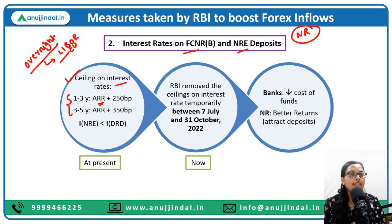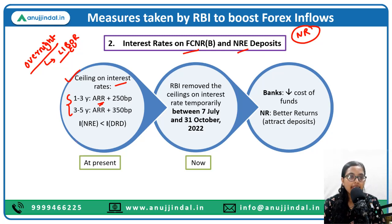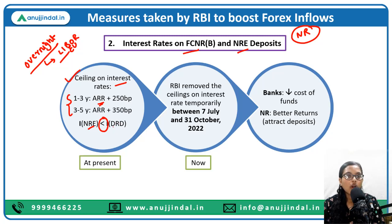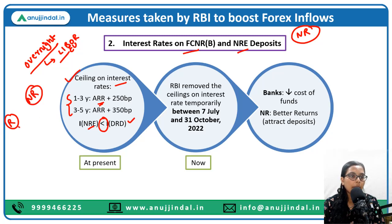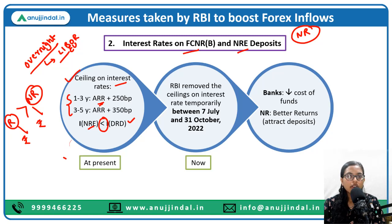So the interest rate ceilings were 250 basis points (2.5%) or 350 basis points (3.5%) on non-resident term deposits. There was also a criterion that any interest paid on non-resident rupee deposits must always be lesser than interest paid on rupee-denominated domestic deposits — meaning a resident depositor would receive more interest than a non-resident depositor in the same Indian bank.